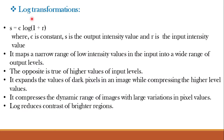Next are log transformations. Log transformation is an intensity transformation or point processing function given by S = C · log(1 + R), where R is the input intensity value, S is the output intensity value, and C is a constant. This maps a narrow range of low intensity values in the input to a wide range of output levels, while the opposite is true for higher input levels. It expands dark pixel values and compresses higher-level pixel values, reducing the dynamic range of images with large variations.